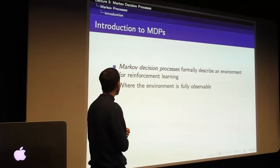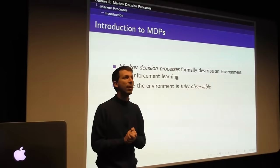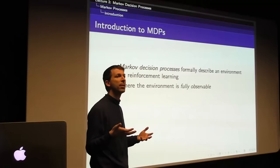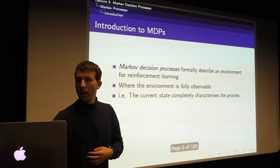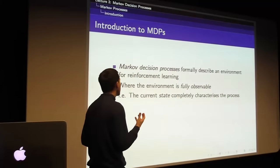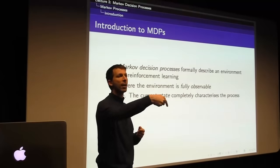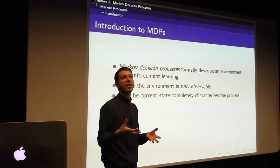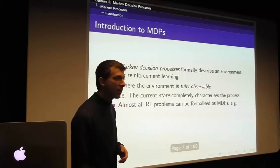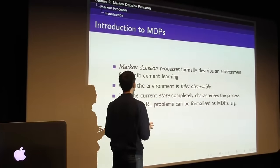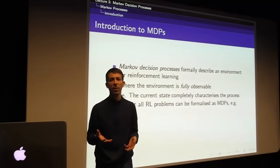We'll start with the nice case where the environment is fully observable — we're told the state. This is where we see everything there is to know about the environment; all relevant information is presented to our agent, nothing is hidden. The current state completely characterizes the process. The way the environment unfolds depends on some state and we know that state. Almost all reinforcement learning problems can be formalized as a Markov decision process.